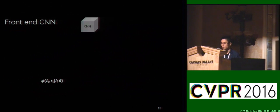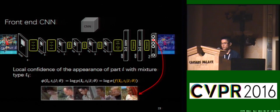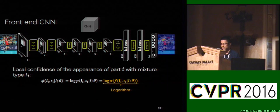First, we introduce our front-end CNN. It is a fully convolutional network. Given an input image, the outputs of this network are score maps of body parts with mixture types. The mixture types of each body part are clustered by its relative location corresponding to its parent body part. Then the score maps are normalized by a softmax layer and then transformed into the log space by the logarithm layer.